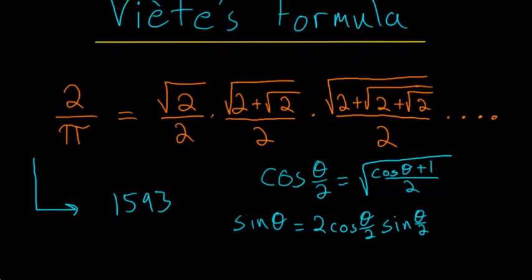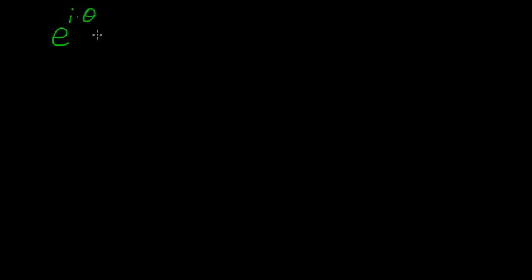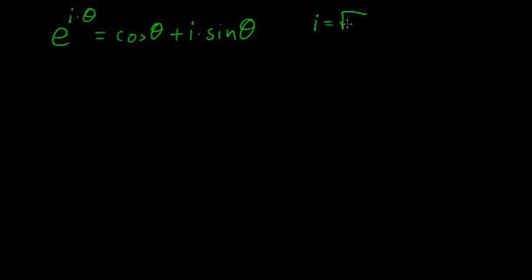So if we start with Euler's formula, we have e to the i times theta is equal to the cosine of theta plus i times the sine of theta. Remember that i is just the square root of negative 1.